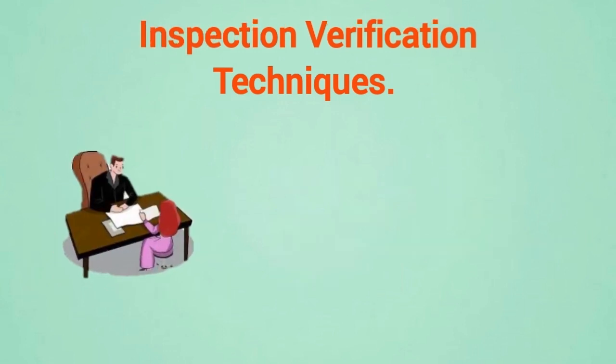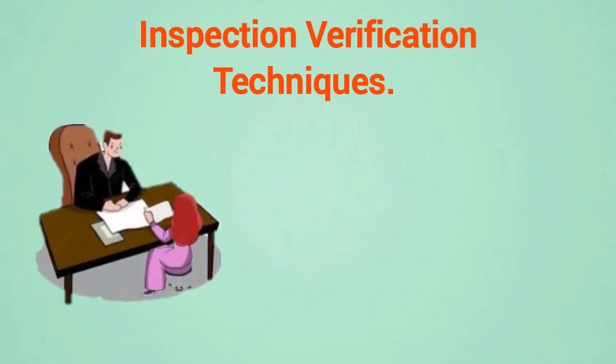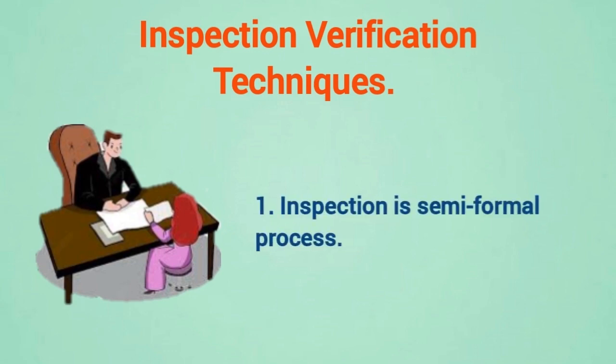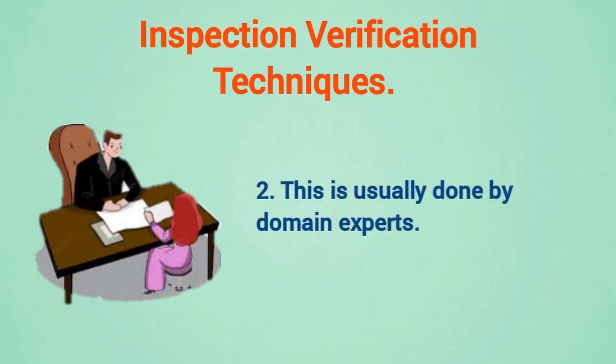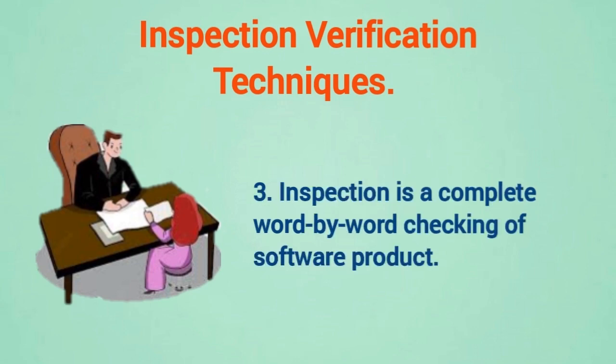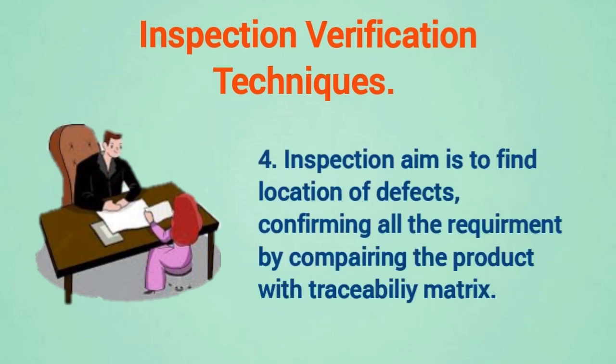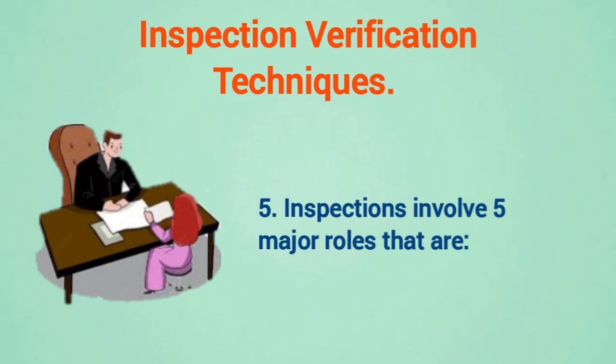Inspection verification technique. First, inspection is a semi-formal process. Second, it is usually done by domain experts. Third, inspection is a complete word-by-word checking of the software product. Fourth, the aim of inspection is to find the location of defects and confirm all requirements by comparing the product with the traceability matrix. Fifth, inspections involve five major roles.